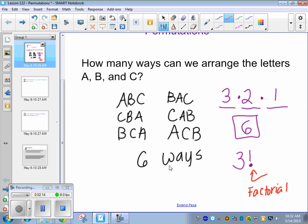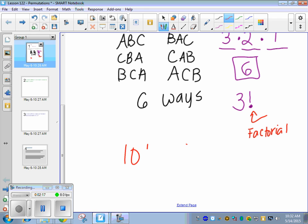Okay? So, if I wrote ten, what would that mean? Ten times nine times eight times seven times six times five times four times three times two times one. Okay? That's what factorial means, all the way down.